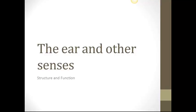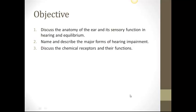The Ear and Other Senses: Structure and Function Lecture. The objectives of this lecture are to discuss the anatomy of the ear and the sensory function in hearing and equilibrium, name and describe the major forms of hearing impairment, and discuss the chemical receptors and their functions.